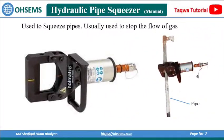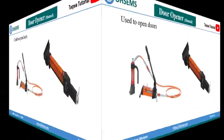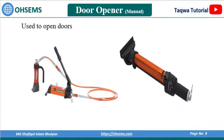Hydraulic pipe squeezer is used to squeeze pipes, usually to stop the flow of gas. Door opener is used to open doors.